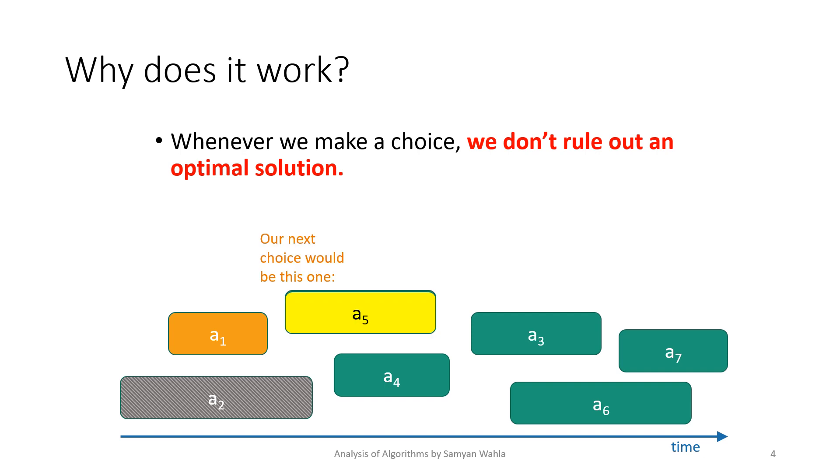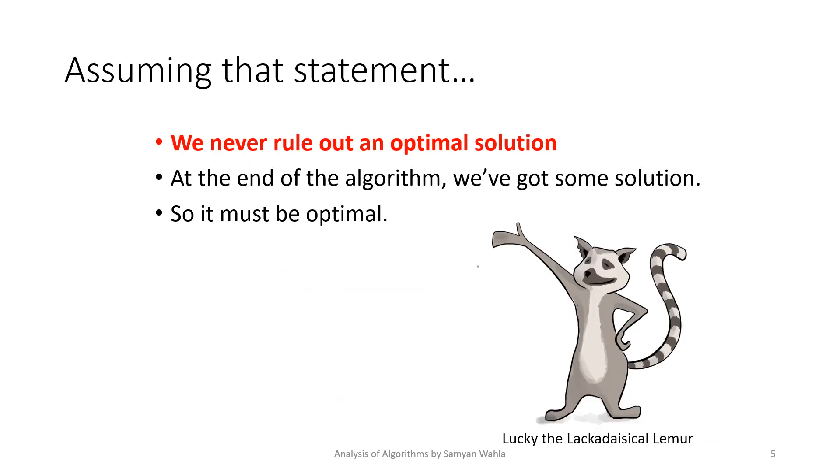After selecting a1 activity, our choice will be a5. But after selecting a5, there exists an optimal solution that will extend our current solution. Our current solution is that we selected a1 and a5 as activities to be scheduled. After that, there still exists an optimal solution that will extend our current solution.